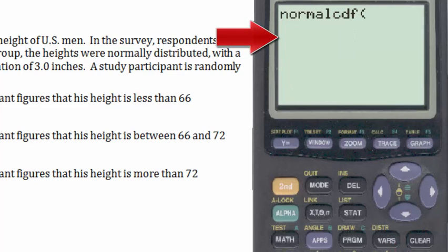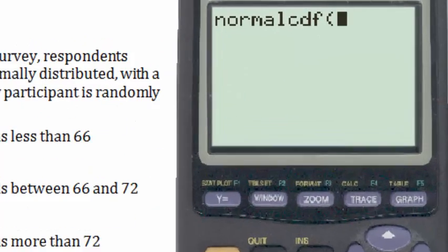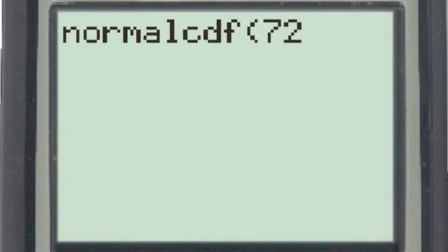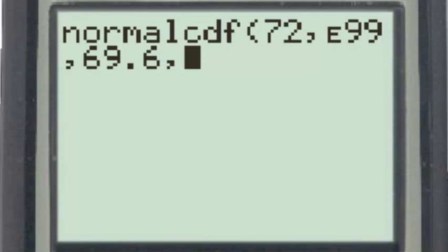And now input the raw scores of 72, followed by a comma, then infinity, e99, then the mean of this distribution, which was 69.6, and then a comma, and the standard deviation, which is 3.